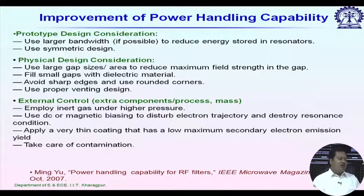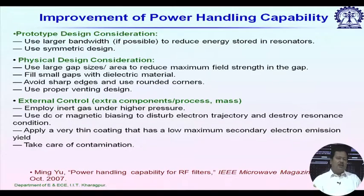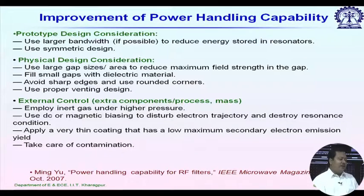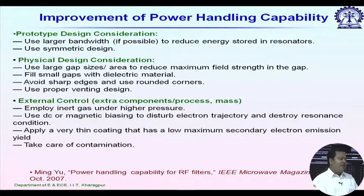Use DC or magnetic biasing to disturb the electron trajectory and destroy the resonance condition — since multipaction is a resonance phenomenon, disturbing the electron trajectory can avoid it. Apply a very thin coating that has a low maximum secondary electron emission yield — this increases the threshold voltage for multipaction breakdown. Finally, take care of contamination, and employ inert gas under high pressure, but it must be free of any water vapor.